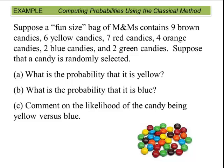Suppose a fun size bag of M&Ms contains 9 brown, 6 yellow, 7 red, 4 orange, 2 blue, and 2 green. Suppose that a candy is randomly selected. What's the probability it's yellow? What's the probability it's blue? Comment on the likelihood of the candy being yellow versus blue. We're going to use the classical method for this one. Each candy has an equal chance of being selected. So we simply count the number of yellow and divide it by the total number.